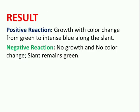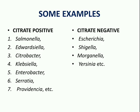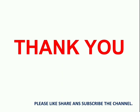For a positive reaction, we can see growth with color change from green to intense blue along the slant. For a negative reaction, there is no growth or no color change and the slant remains green. This image shows negative and positive citrate reactions. Some examples of citrate-positive organisms are Salmonella, Citrobacter, Klebsiella, Enterobacter, and Providencia. Citrate-negative organisms include Escherichia coli, Shigella, Morganella, and Yersinia.